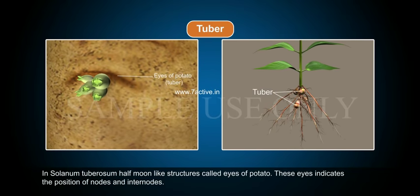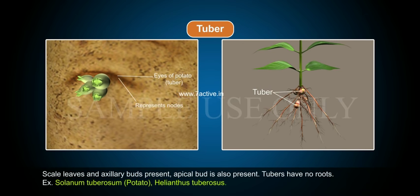Tuber in Solanum tuberosum (potato): half-moon-like structures called eyes indicate the position of nodes and internodes. Scale leaves and axillary buds are present; an apical bud is also present. Tubers have no roots.